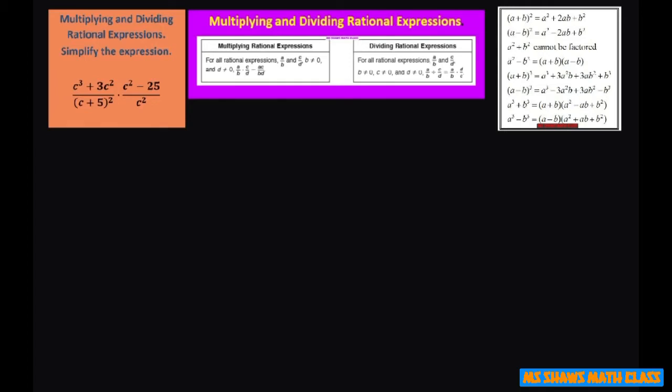So for the first piece here, we're going to pull out the greatest common factor and that's the C squared. So this piece is going to be C squared and inside is going to be C plus 3.